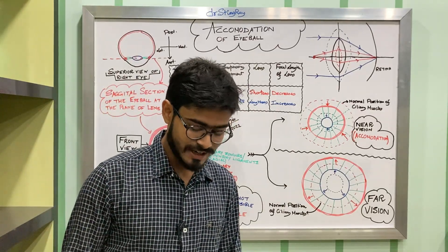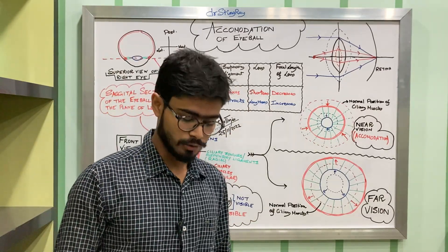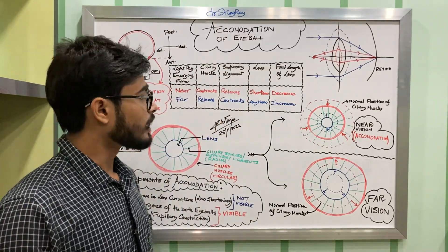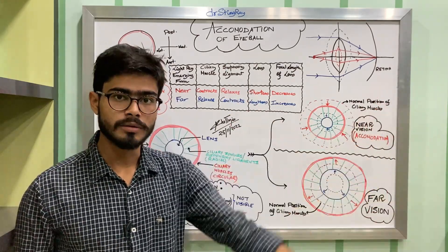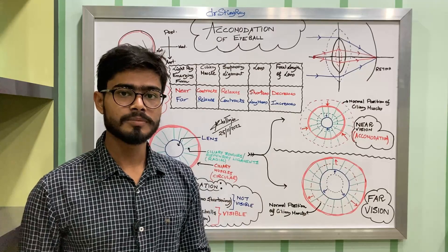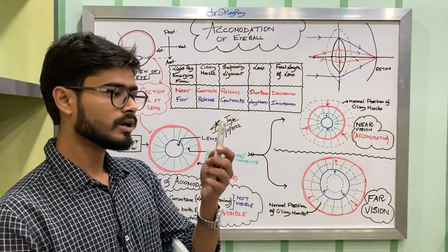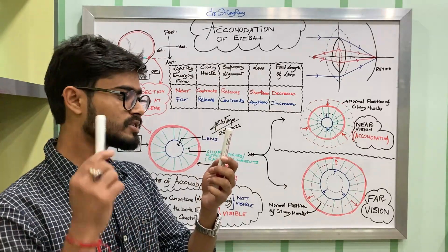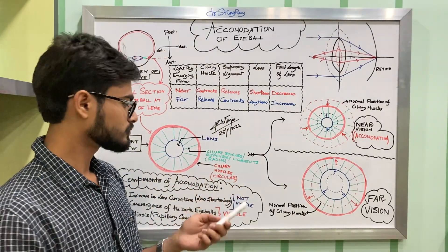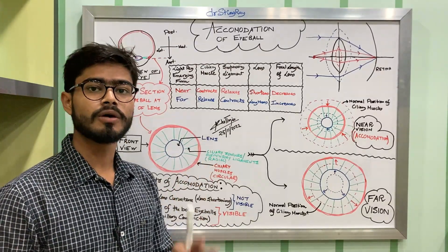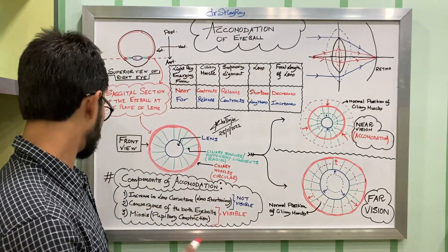Welcome to the channel. Today we are going to talk about accommodation of the eyeball. Accommodation refers to the changes through which our eye goes through when we are looking at a distant object and we suddenly try to focus on a nearby object. Now, what are the three main components of accommodation?